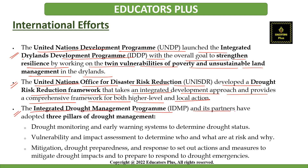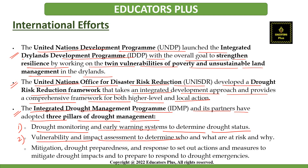The Integrated Drought Management Program and its partners have adopted three pillars of drought management. The first pillar is drought monitoring and early warning systems to determine drought status. The second is vulnerability and impact assessment to determine who and what are at risk and why. The third is mitigation — drought preparedness and response — to set out actions and measures to mitigate drought impacts and to prepare the response to drought emergencies.